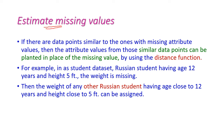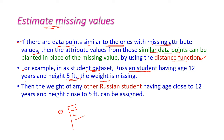The third method is estimating missing values. If there are data points similar to the one with the missing attribute value, it may be replaced using the value from a similar record by using a distance function. For example, in a student dataset, one Russian student is 12 years old with a height of 5 feet, but the weight is missing. We can find another Russian student whose age is also 12 years and height is 5 feet, and replace the missing weight with that student's weight. This weight will be substituted for the missing value in the first record.